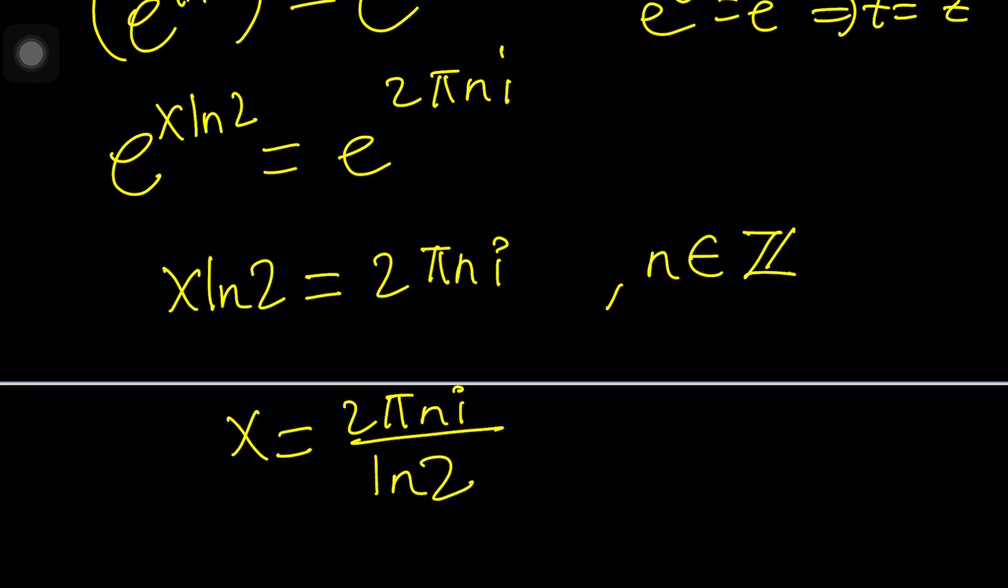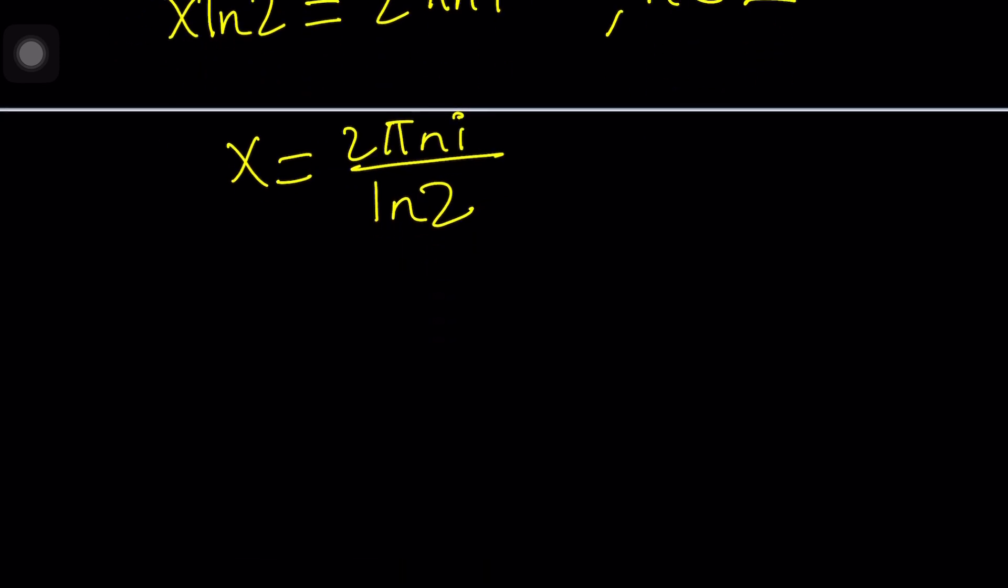Now, you can definitely go ahead and do a couple different things here. For example, you can evaluate... Wait a minute. What are we evaluating? What is n? n can be anything. So, suppose n is equal to 0. This is going to give us the special solution x equals 0. And as you know, 2 to the power x equals 1 is satisfied by x equals 0. That was the most obvious solution.